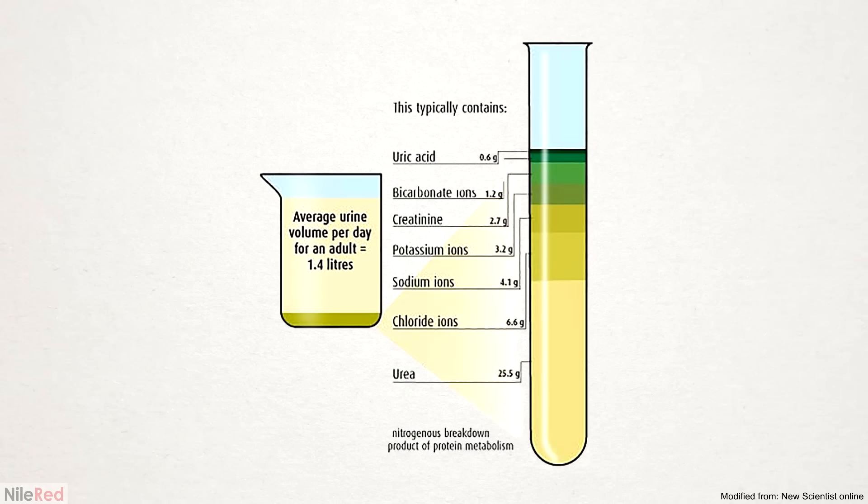Urine is produced by the kidneys, and it's a way for the body to get rid of excess water and water-soluble waste. The exact composition of urine varies from person to person, but in general, this is what it contains.